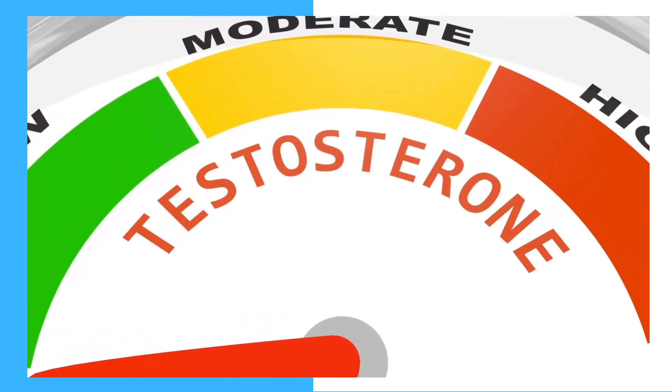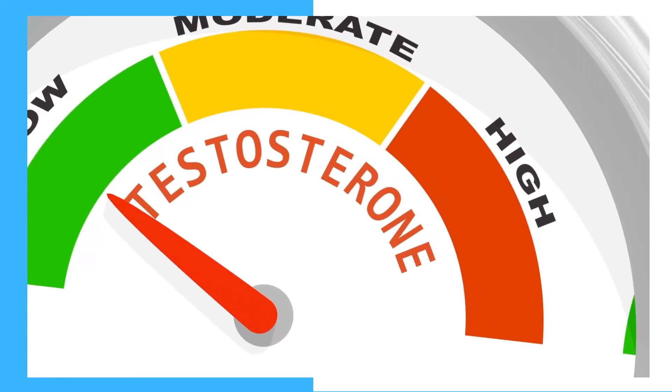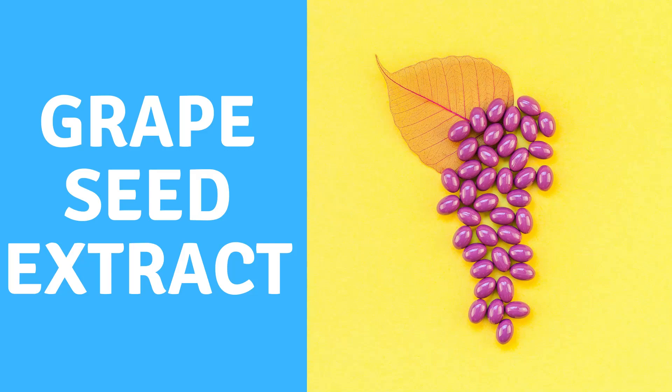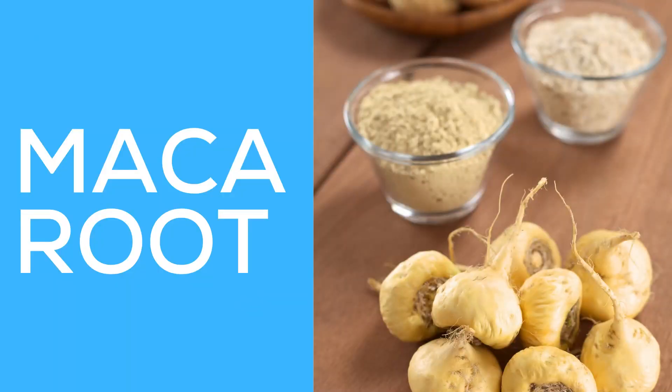Point number ten is high or too-low testosterone levels, which is especially problematic if you struggle with PCOS, where testosterone is typically too high. Check free testosterone levels and DHEA — if either is elevated, you need to work on decreasing it. Grape seed extract is an effective natural testosterone blocker, and maca root can also help with elevated testosterone in PCOS and thyroid disease.